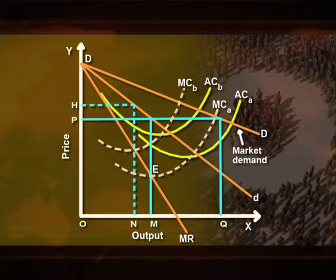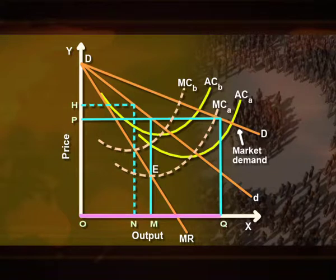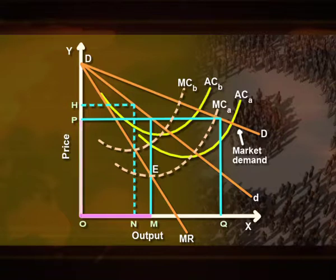Since firm A and firm B produce homogeneous products, they cannot charge two different prices. As the profit-maximizing price OP of firm A is lower than that of firm B, firm A will set the price and firm B will follow it. Thus, firm B will also charge price OP and produce and sell quantity OM, because at price OP it can sell OM output like firm A since the demand curve facing each firm is the same. Both firms will charge the same price OP and sell the same quantity OM. Total output of both firms will equate with total market demand OQ, which equals OM plus OM at price OP. At price OP, profits earned by A and B would differ. While firm A will be maximizing profits by selling output OM at price OP, the profit earning of B will be below the maximum level, because it earns maximum profits at output OM and price OH. Therefore, the profits of firm B will be less due to differences in the cost of production.